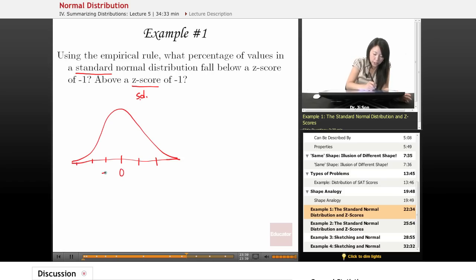And instead, we just know the standard deviations, or what we call the z-scores. Now, what they want to know is what percentage of values fall below a z-score of negative one.